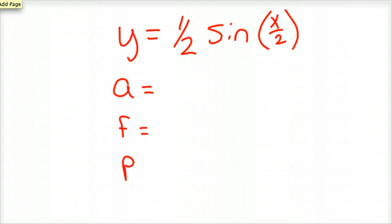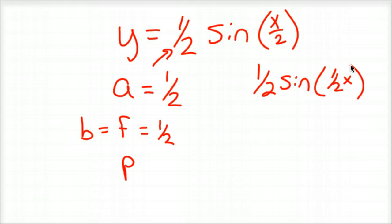So amplitude would be 1 half because that's that number there. Frequency, since it's x over 2, my b value, and I guess I shouldn't have called it f, my b value is 1 half as well because you could write this as 1 half sine of 1 half times x and it'd be the same thing because there's a little 1 there, there's no number.